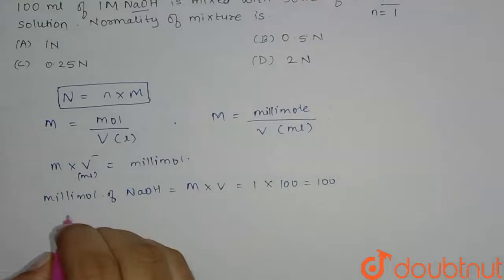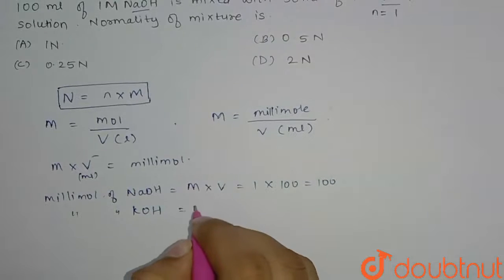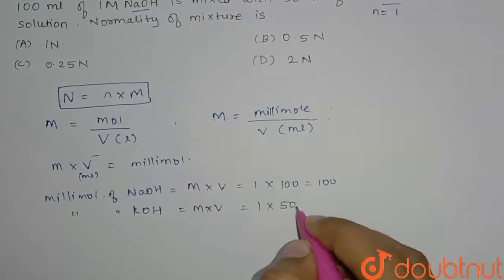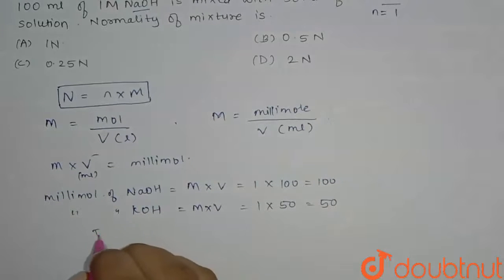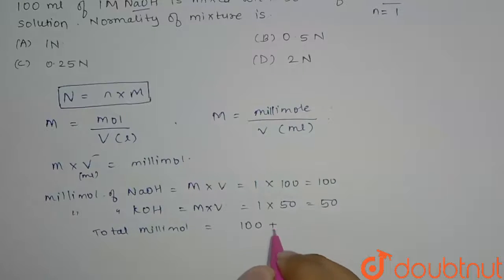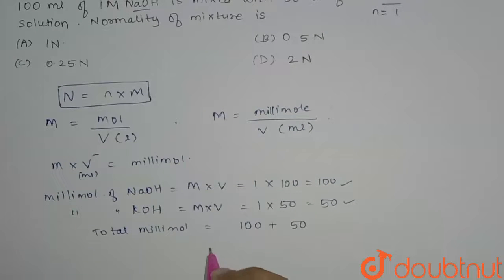Now we will find millimole of KOH. It will be M times V, so it will be 1 times 50. So now we will find total millimole, that is equal to 100 plus 50. So our answer is 150.